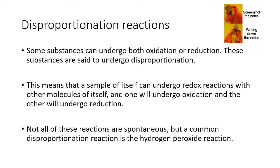Disproportionation reactions: some substances can undergo both oxidation and reduction. These substances are said to undergo disproportionation. So that means within a sample of itself — say you have 100 molecules of one thing — some of them will undergo redox reactions with other molecules of itself. One will undergo oxidation and another will undergo reduction, so you might have 50 undergo oxidation and 50 undergo reduction.